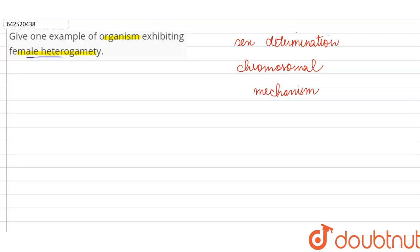So over here, we are talking about female heterogamety. And such sex determination mechanism, where females are heterogametic, or females can produce different type of gametes, is found in most of the birds. This is known as ZW type of sex determination.